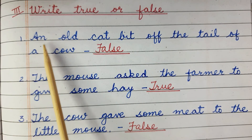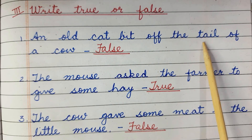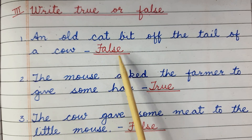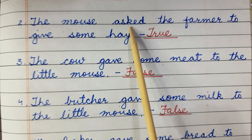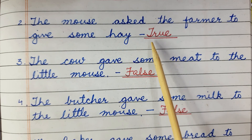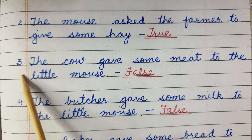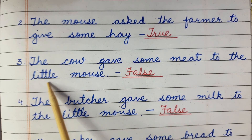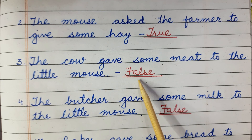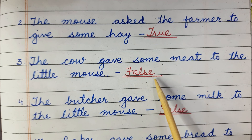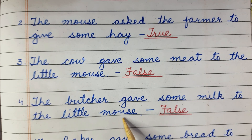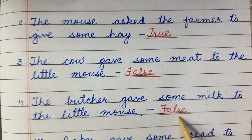First: An old cat bit off the tail of a cow. This is a false statement, so we will write F-A-L-S-E, false. Second: The mouse asked the farmer to give some hay. This is a true statement, so we will write T-R-U-E, true. Third: The cow gave some meat to the little mouse. No, the cow did not give any meat, so it is false — F-A-L-S-E. Fourth: The butcher gave some milk to the little mouse. Again, this is a false statement — F-A-L-S-E.